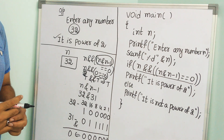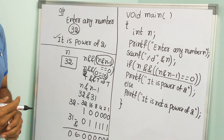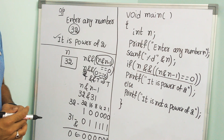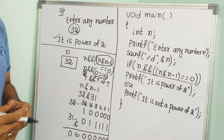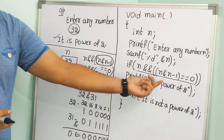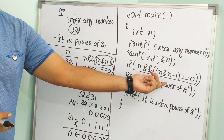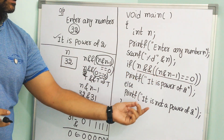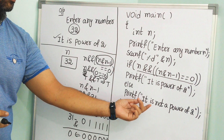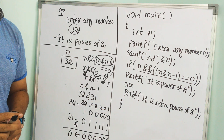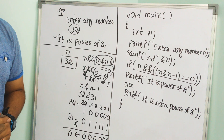Since the condition evaluates to true, it displays the output: it is a power of 2. Similarly, if you consider a number like 35 which is not a power of 2, the entire conditional expression will evaluate to false, and it will go to the else block and print: it is not a power of 2.